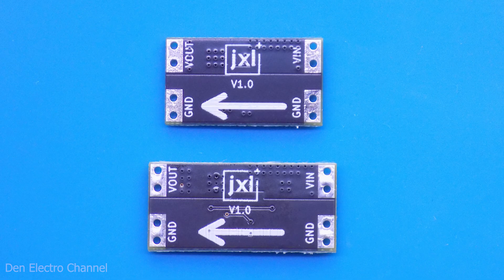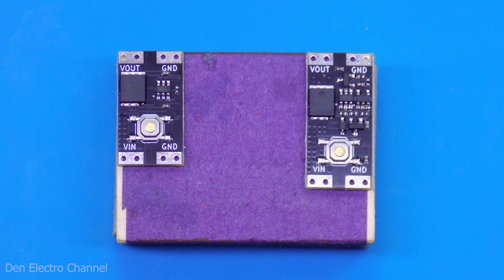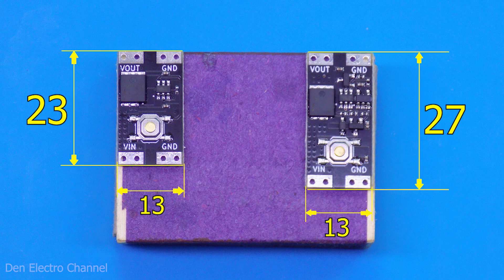There is nothing on the back side of the boards other than the tracks. The minus in both cases goes directly through the entire board. Switching in the circuit occurs on the positive side. The module sizes are very small. The photo shows a comparison with a matchbox. Thanks to such compact sizes, they can be integrated into almost any device.